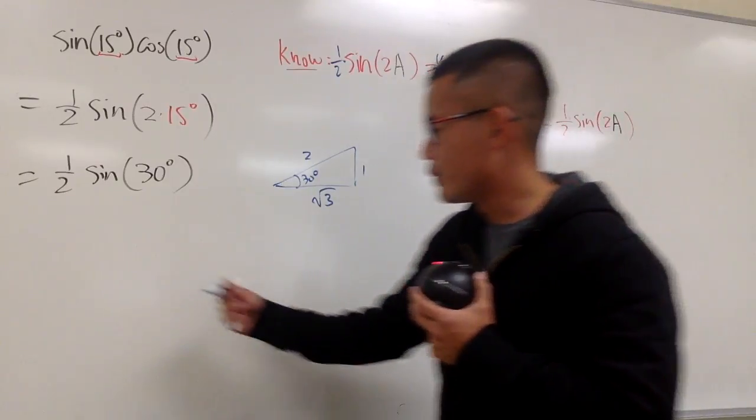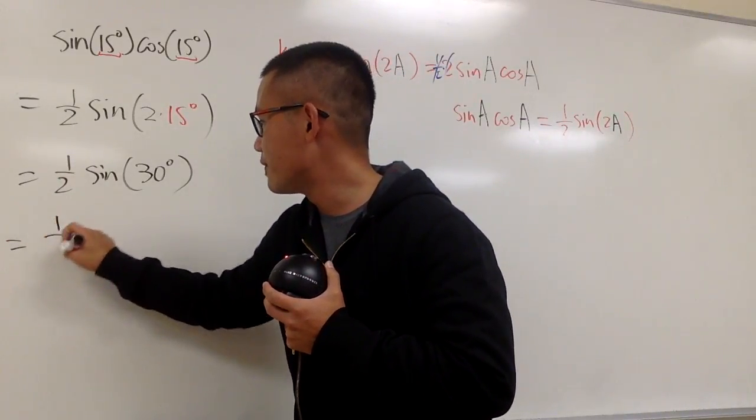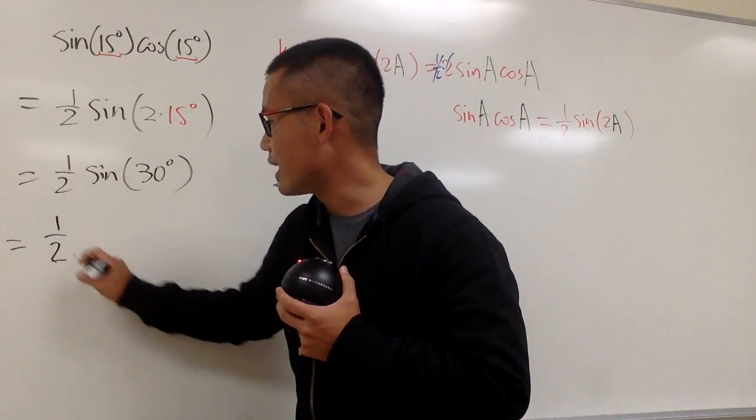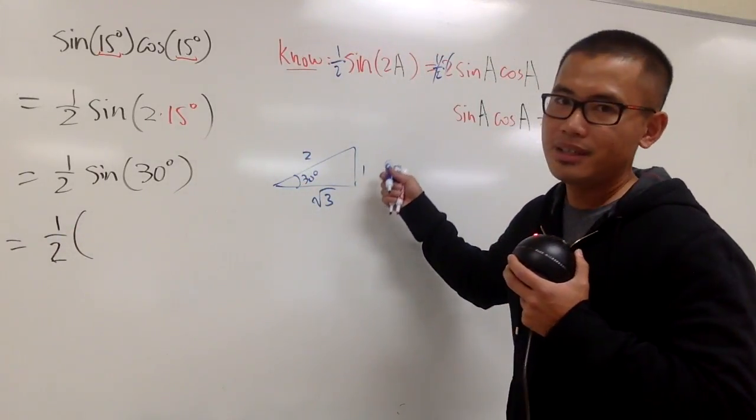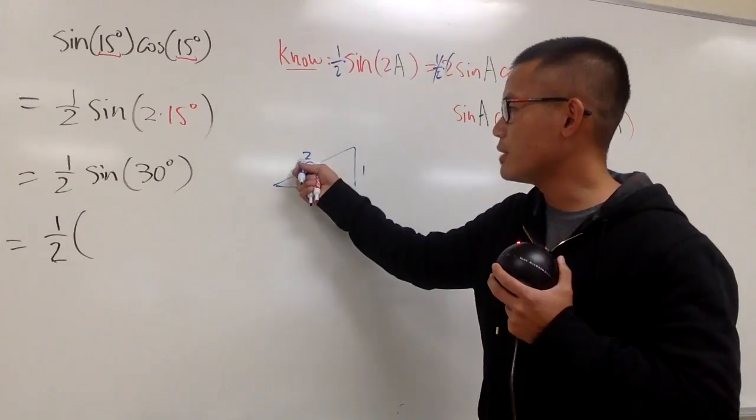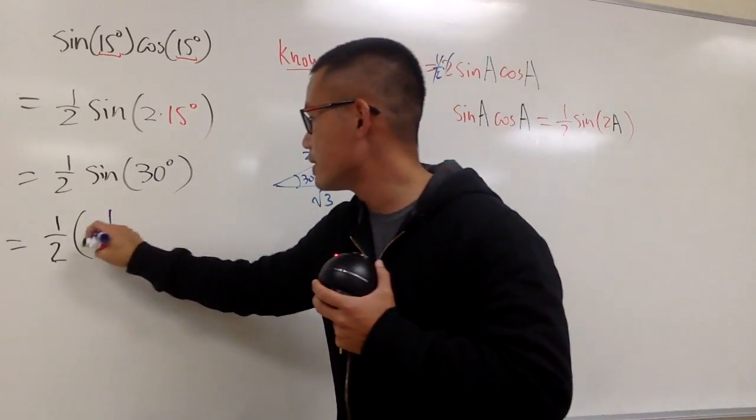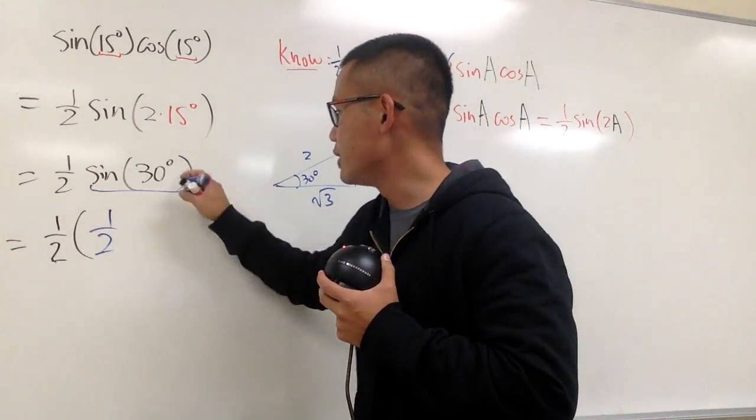What's sine of 30 degrees? Well, let me put down the 1 half from here first. Sine of 30 degrees, as you know, is the opposite over the hypotenuse, namely 1 half for the sine of 30 degrees.